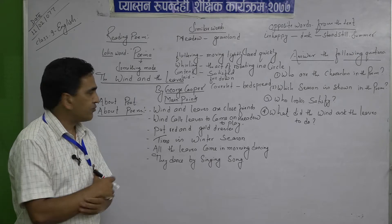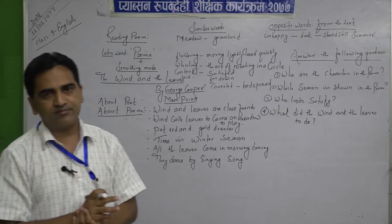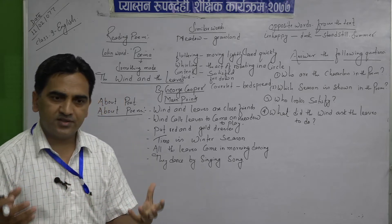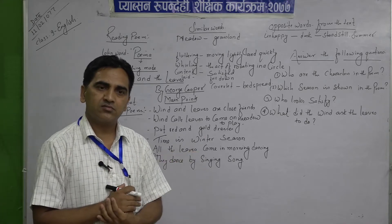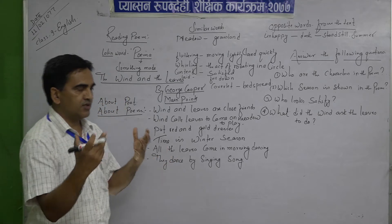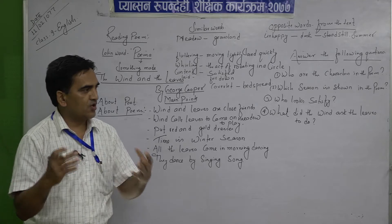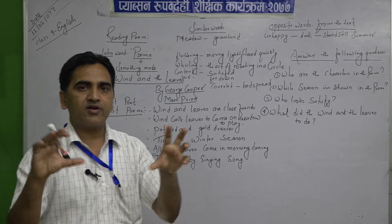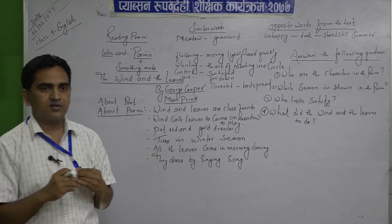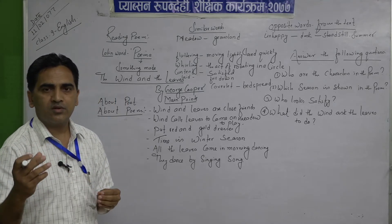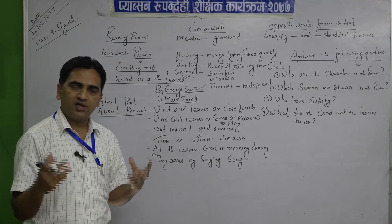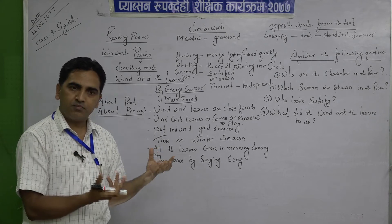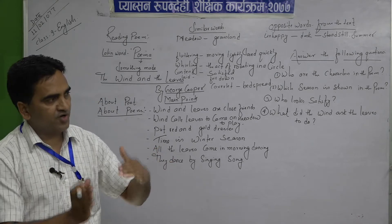Poetry is different from other genres in how it is written and recited. A poem has different qualities — such as imagery, alliteration, assonance, simile, and metaphor. These are the elements of poetry. For example, in Nepali we have famous lines by Anubhakta, and in English: 'The woods are lovely, dark and deep, but I have promises to keep, miles to go before I sleep.'